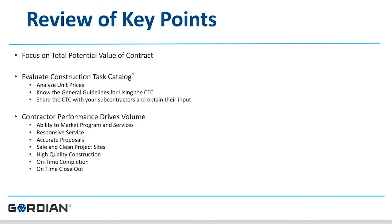Evaluate the prices in the construction task catalog — you'll need to get your bearings. Is it reflective of your local market? What do your subcontractors think about the unit prices? You need their input to set your adjustment factor. Subcontractor markup needs to be taken into account in your adjustment factor. Know the guidelines for using the CTC as published at the very front of the book. Share the price book with your subcontractor community, have them assess their sections, and potentially have them bid an adjustment factor to you — this is especially true for mechanical, electrical, and plumbing sections.